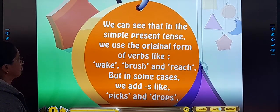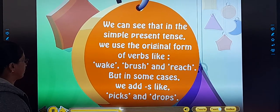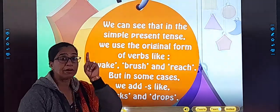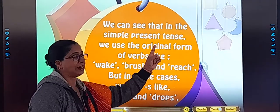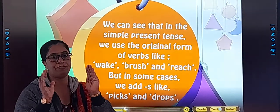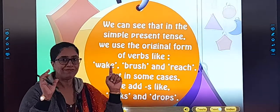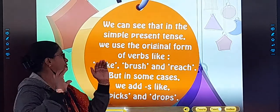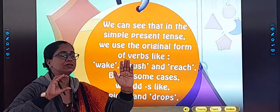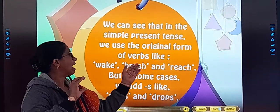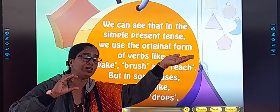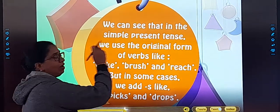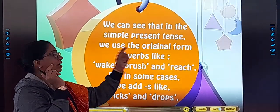We can see that in the Simple Present Tense, we use the original form of verbs like wake. So remember, in Simple Present Tense, we use the original verb form. For example, we have learned in the previous video, the verb form: first one, Present Tense is the original verb form, wake. Past Tense is woke. And future, which is the verb form, future tense, I will wake up.